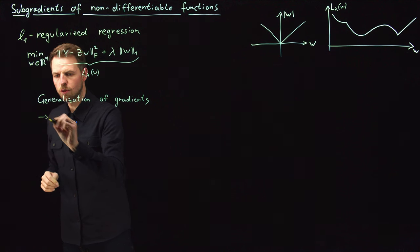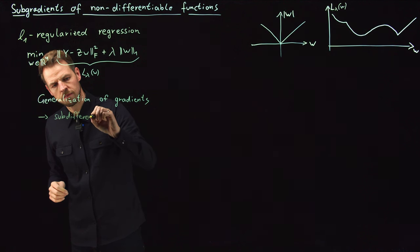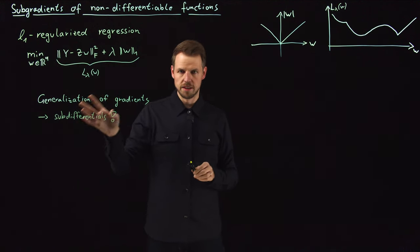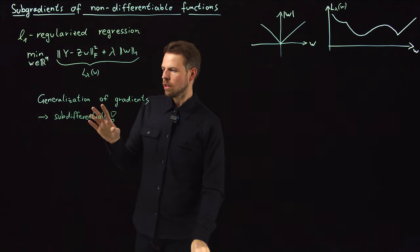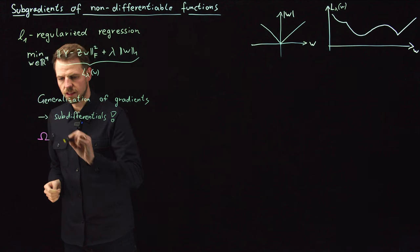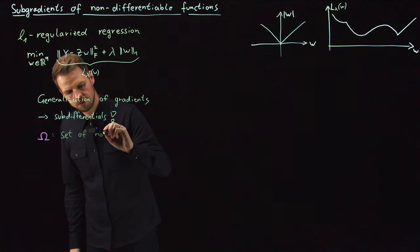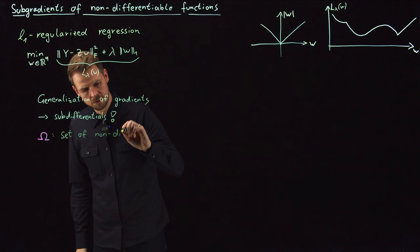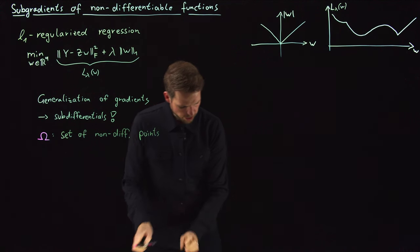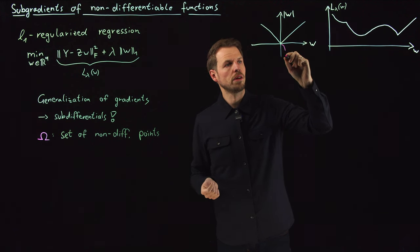We need a name for what we are going to look for, and this is what we call sub-differentials. So instead of the gradient, we can compute a sub-differential. Before we get there, we need to define the set omega, which is the set of non-differentiable points. For the one norm — the absolute value in 1D — that point is omega. So the set omega is simply the set containing the value zero.